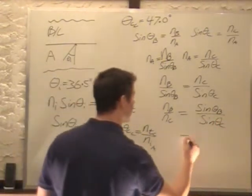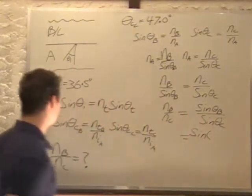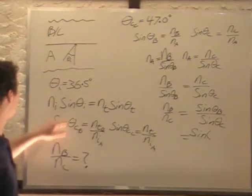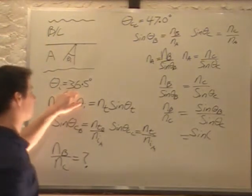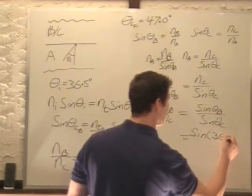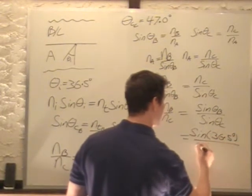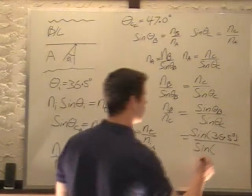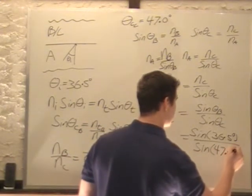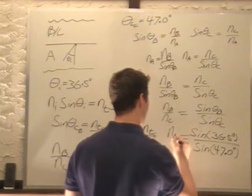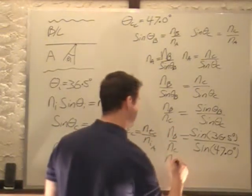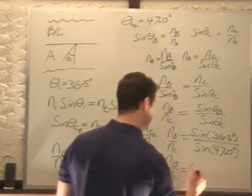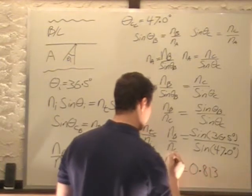Now all I do is plug in. Sin(theta_B) is my critical angle for B when B is on top, and that is 36.5 degrees, divided by sin of the critical angle when C is on top, and that is 47.0 degrees. That is my ratio n_B over n_C. When I actually put that in, I get an answer of 0.813. That is my ratio, final answer.